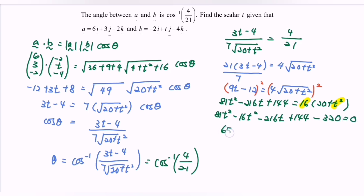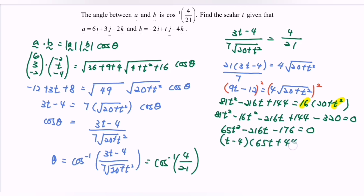Rearranging and simplifying gives 65t² − 216t − 176 = 0. Factoring: (t − 4)(65t + 44) = 0. Therefore, t = 4 or t = −44/65. Those are the scalar values for t.